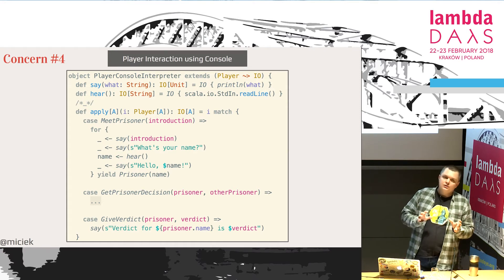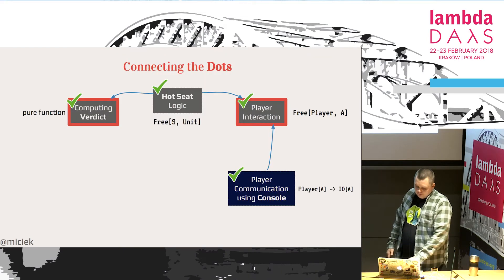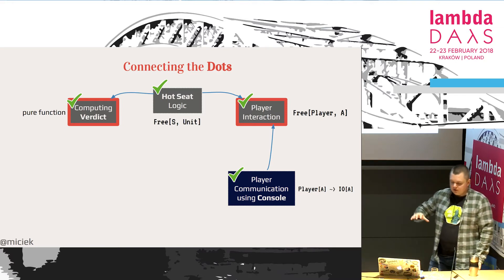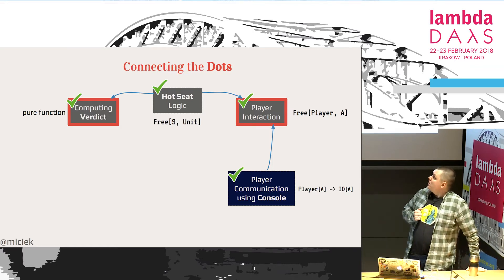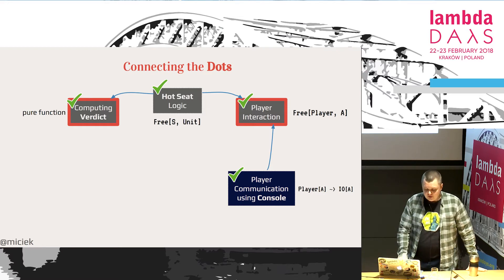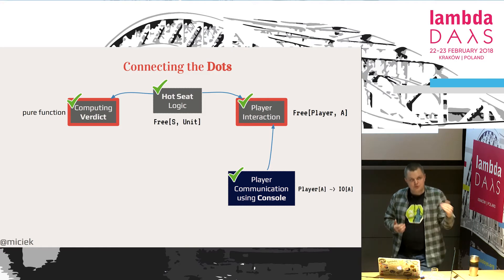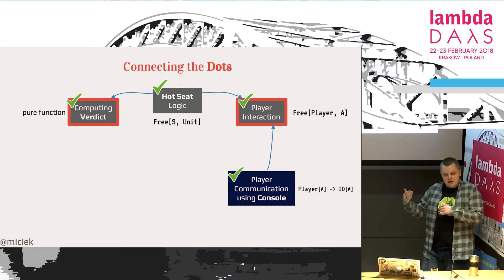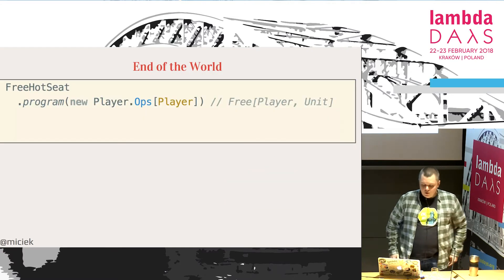Let's implement this interpreter from Player to IO. For each operation we pattern match: if it's MeetPrisoner, then we can println, getLine, and things like that — all wrapped in IO. IO[A] is a description of a side effect — a block of code which will return A at the end of the computation. We are using types to describe the computations. Connecting the dots: we can see the same application, hot seat game with two players at one computer. Those four concerns are now implemented using the free approach: verdict is a pure function, hot seat logic is the for comprehension program returning unit, player interaction is our free program which can be interpreted into IO.